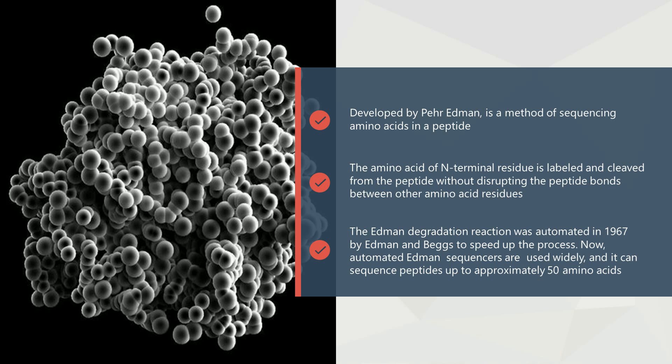The Edman degradation reaction was automated in 1967 by Edman and Begg to speed up the process. Now, automated Edman sequencers are used widely, and can sequence peptides up to approximately 50 amino acids.